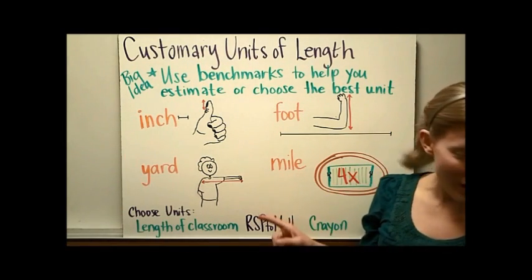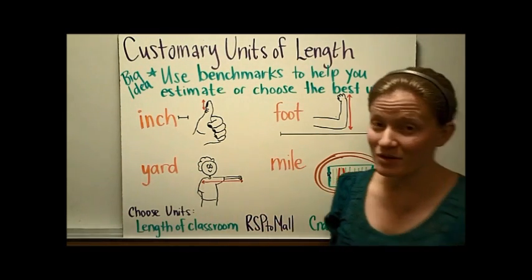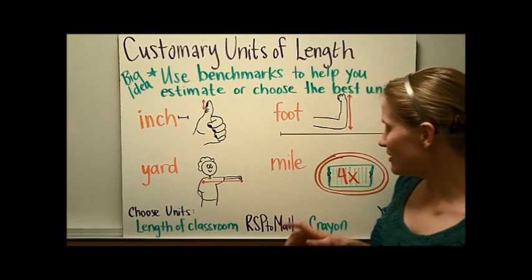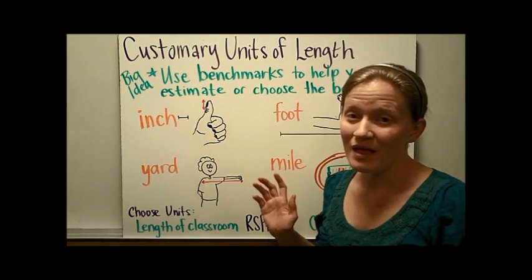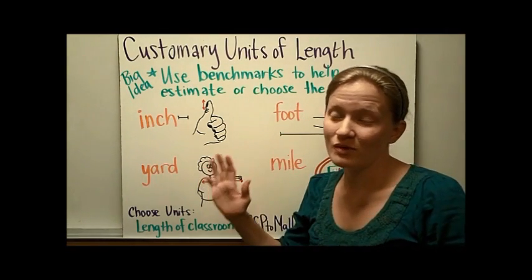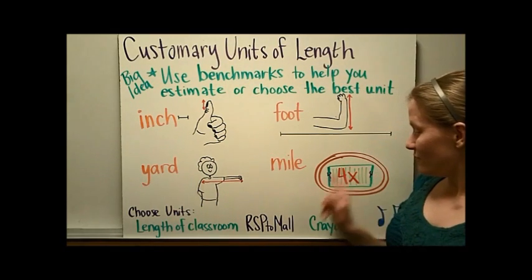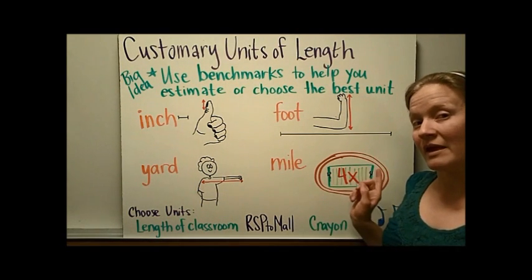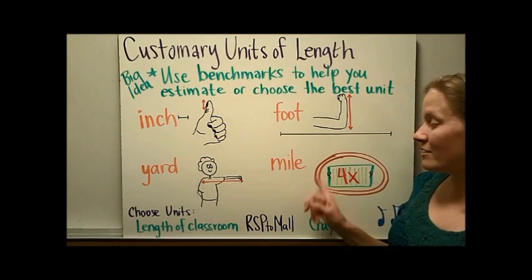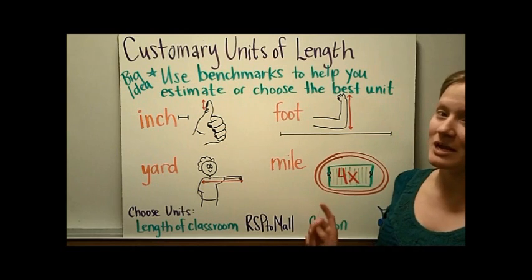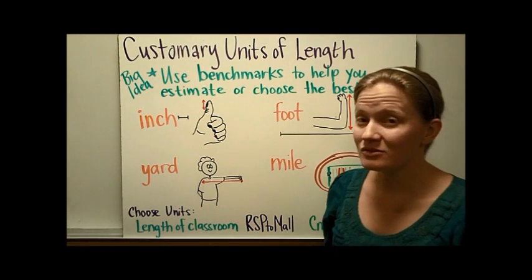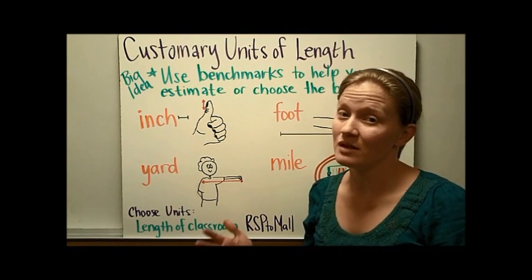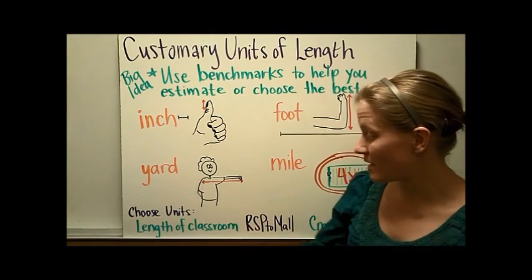And then one mile — you might think about what you've had to run in gym before. If you've been to a high school stadium where there's a football field and a track around the outside, generally one mile is four times around the track. So let's do some examples of choosing the best unit of customary length measurement.